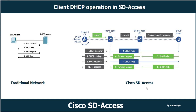In a traditional network, the DHCP client will send a DHCP Discovery message — this is a broadcast message — and receive a DHCP Offer message. This is also broadcast because until now the DHCP client doesn't have an IP address. Then DHCP Request, and finally DHCP Acknowledge. After the DHCP Acknowledge message, the DHCP client actually has an IP address.